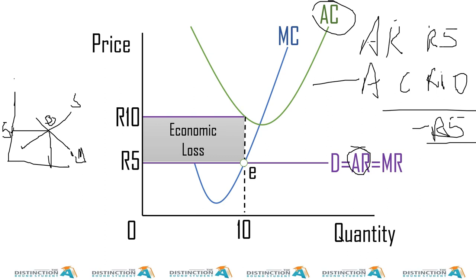So this negative five informs us that the firm is making an economic loss of negative five Rand per unit. And then how many units are being sold? They are selling 10 units.